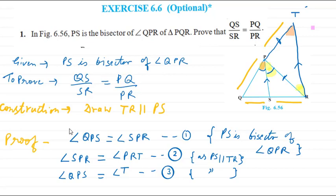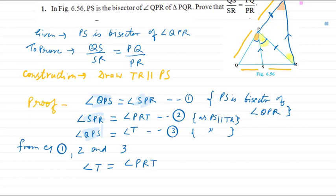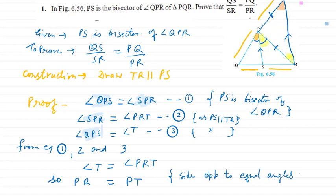From equations 1, 2, and 3, we can see angle T equals angle PRT. Since both these angles are equal, the opposite sides are equal. The side opposite to T is PR, and the side opposite to angle PRT is PT. So PR equals PT. This is in triangle PTR — side opposite to equal angles.